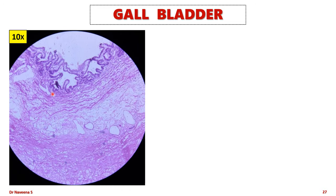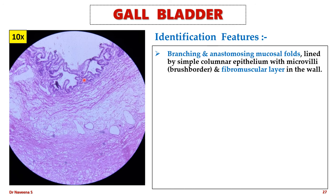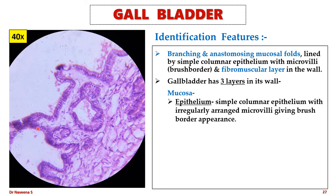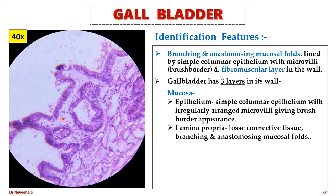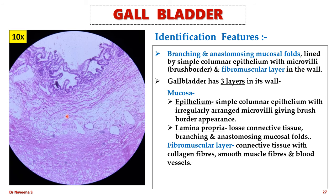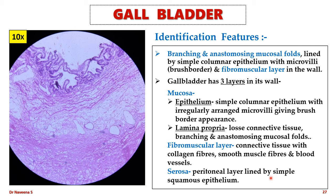Gallbladder — here is the slide seen under low magnification. It is identified by the presence of branching and anastomosing mucosal folds lined by simple columnar epithelium with a brush border, and a fibromuscular layer in the wall. Gallbladder has three layers: mucosa, fibromuscular layer, and serosa. Mucosa is lined by simple columnar epithelium with microvilli arranged irregularly to give a brush border appearance; lamina propria shows loose connective tissue with blood vessels forming the branching and anastomosing mucosal folds. Fibromuscular layer is formed by loose connective tissue with collagen fibers, smooth muscle fibers, and blood vessels. The outermost layer is serosa, formed by the peritoneal layer lined by simple squamous epithelium.